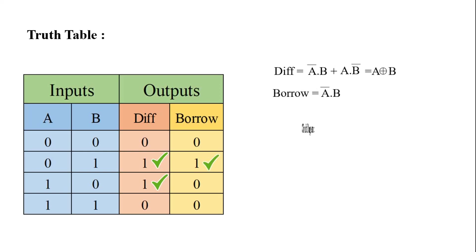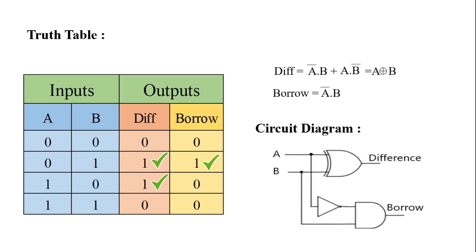Now the circuit diagram. For the half subtractor circuit we need one XOR gate, one NOT gate, and one AND gate. Now we will make this circuit in the simulator.